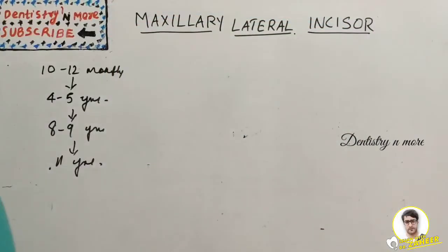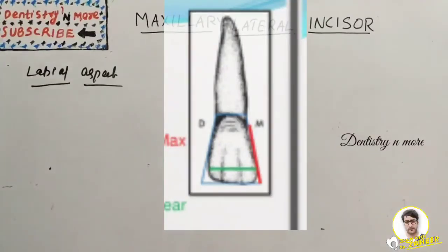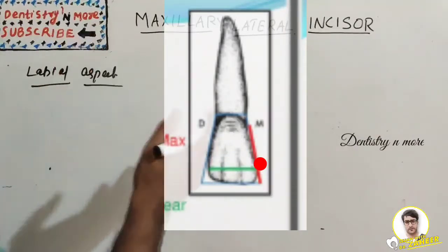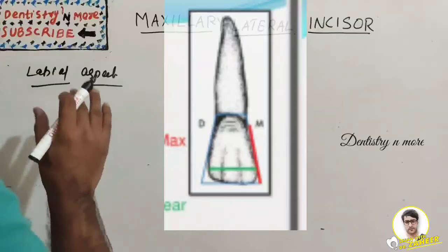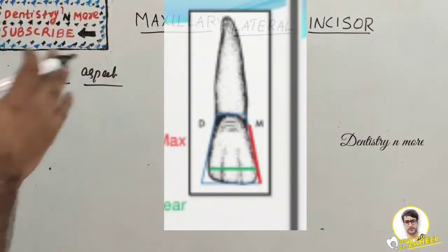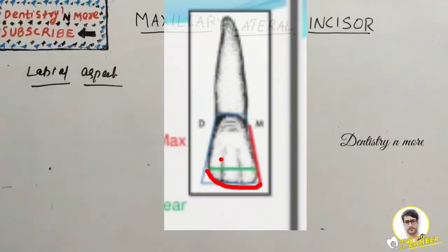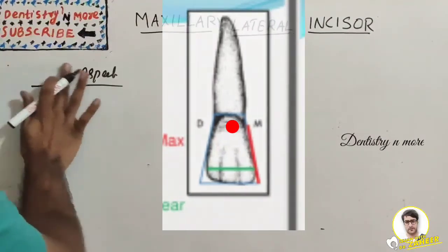Now for the labial aspect: the crown outline is trapezoidal. The mesial margin is approximately similar to the maxillary central incisor. The height of contour on the mesial margin is near the junction of the incisal and middle third. The distal margin is more rounded than the maxillary central incisor. The mesio-incisal and disto-incisal line angles are more rounded than in the central incisor. The incisal outline is similar to the central incisor but not straight, and the crest of curvature on the labial aspect is at the cervical third.